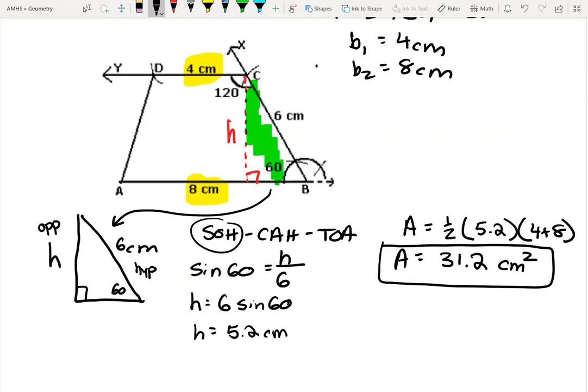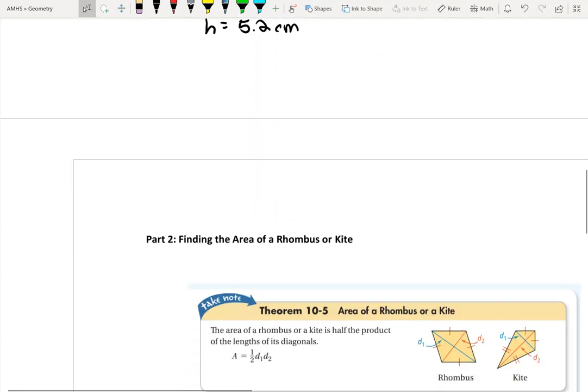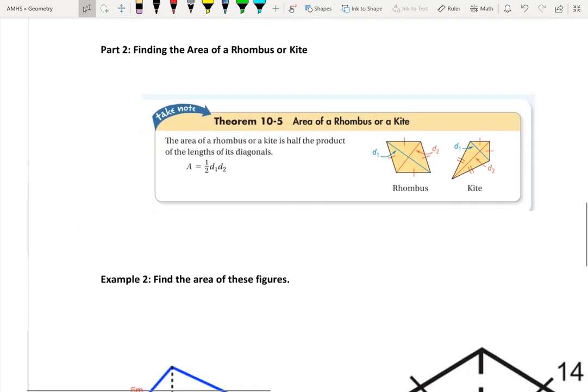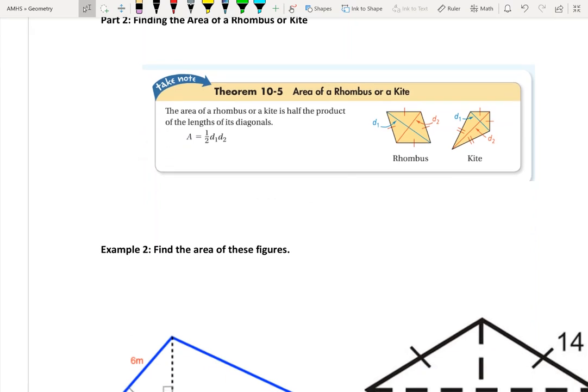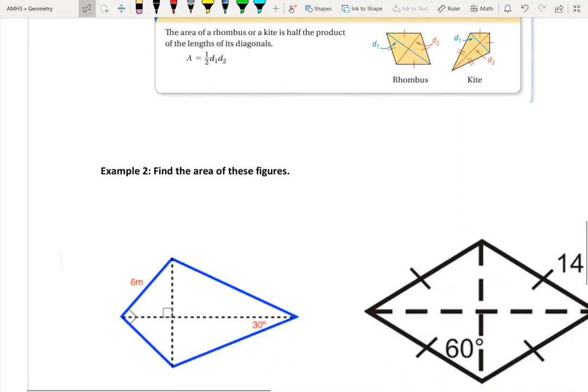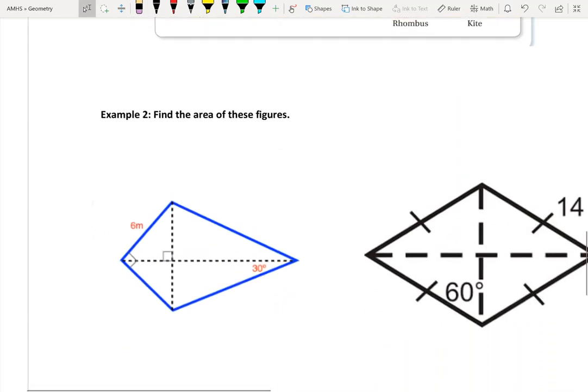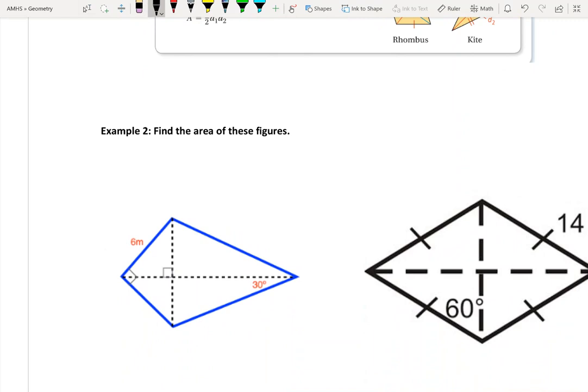That's all for trapezoids. Now, the next one we're going to do is the rhombus and the kite. The neat thing about them is they both have the same formula. It's one half times the diagonals, just the product of those diagonals. One half d1 times d2. In our figure here, d1 is the blue diagonal, d2 is the red. And in the kite, d1 is blue, d2 is red. Let's go ahead and find the area of these figures, which means that I need to know d1 and d2.